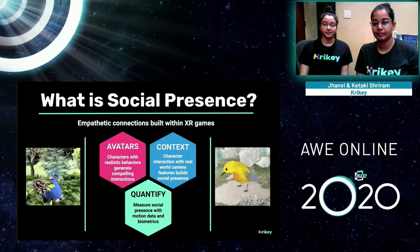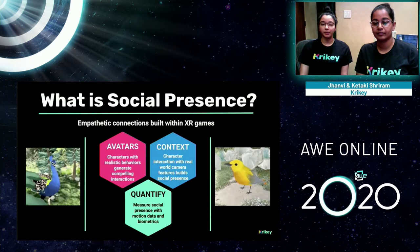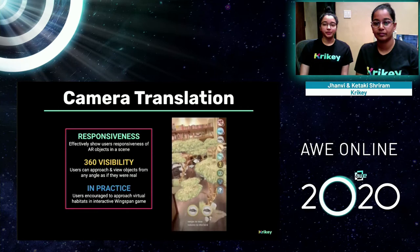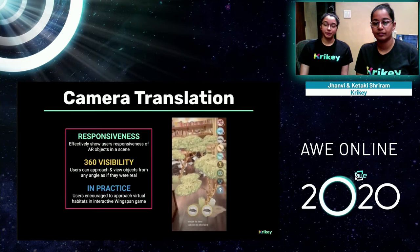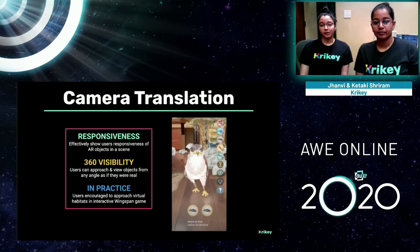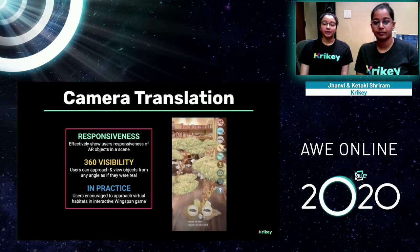A little more about camera translation and why this feature is critical to building compelling XR experiences. First, responsiveness — camera translation allows users to feel that AR objects are getting larger as they get closer, meaning the scene is responsive to them. Second, 360 visibility — users can approach and view augmented reality objects from any angle as though they're actually grounded in the physical world. In practice, we encourage users to approach virtual habitats in our interactive Wingspan game — in the GIF at right, you can see a user approaching the Ferruginous Hawk, and the bird gets larger and closer as the user approaches.